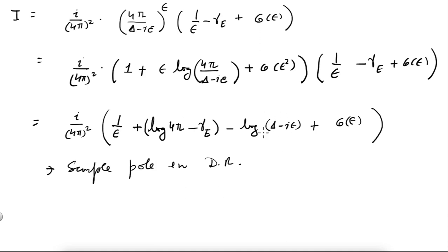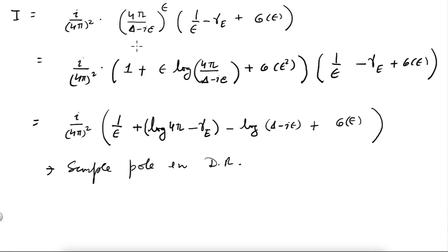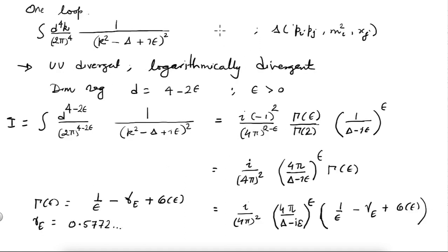Note that no matter what kinematic factors appear in Δ, you are going to get, in addition to the singularity 1/ε, the combination log(4π) − γ_E. That constant is always going to appear at one loop. The kinematic dependence is contained in the logarithm of Δ. Also note that you have Δ − iε, so it is useful to keep this iε.